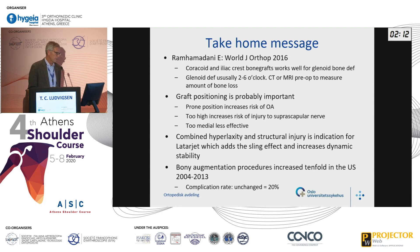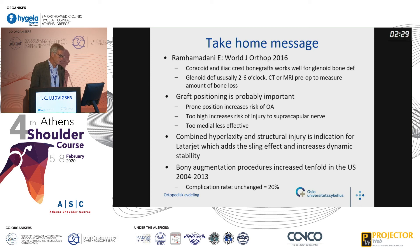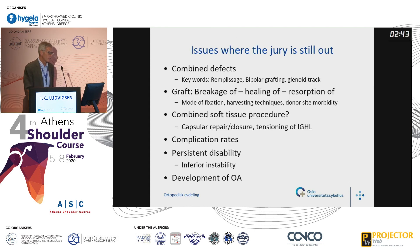The take-home message is that the coracoid and iliac crest bone graft works well for glenoid bone deficiency, which is usually at the two to six o'clock position. Graft position is probably important. Combined hyperlaxity and structural injury is an indication for Latarjet, which adds the sling effect and increases dynamic stability. Bony augmentation procedures increased tenfold in the U.S. in the period 2004 to 2013, but the complication rate remained unchanged at 20%.